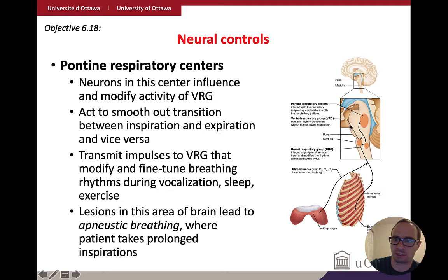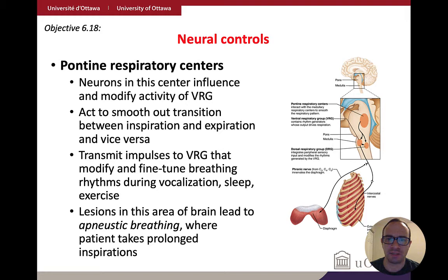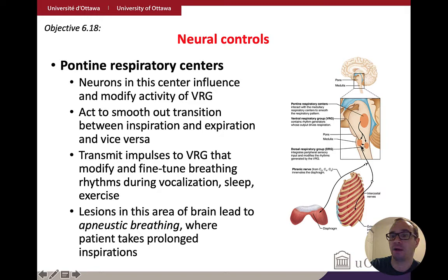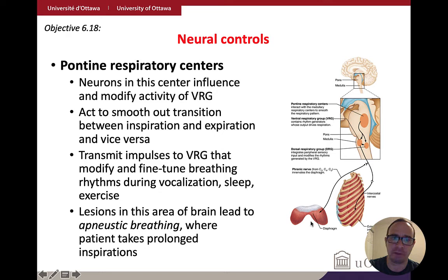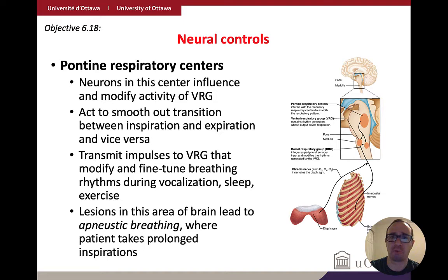You also have the pontine respiratory centers, located up in the pons. The medulla oblongata is where you also have those cardiac regulation centers. The pontine respiratory centers help smooth out your breathing — during sleep, during exercise, during speech. Right now, my pontine respiratory center is sending signals down to both the ventral and dorsal respiratory groups, integrating those signals to help control the basic rate of inhalation and exhalation. Lesions in this region can lead to what we call apneustic breathing — really long and prolonged inspirations.